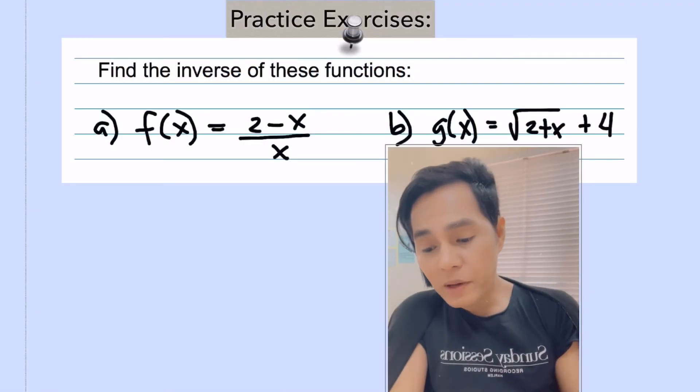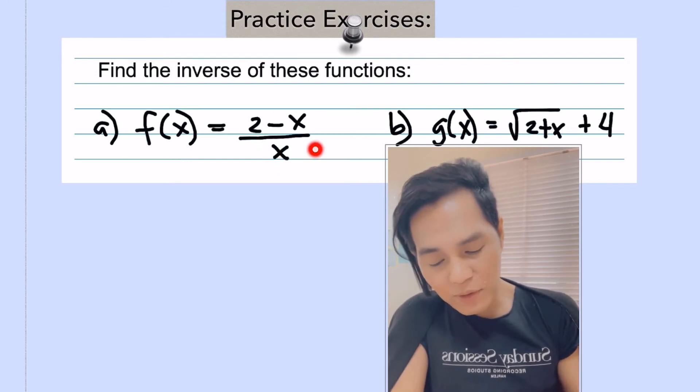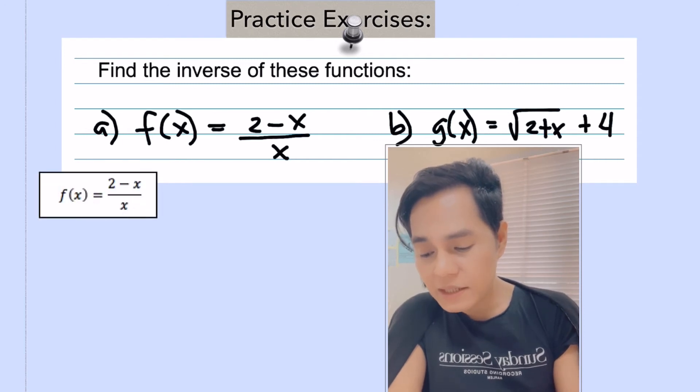Our next problem here is f(x) equals 2 minus x over x. So this is a rational function. How are we going to find out the inverse of this given function? Just simply the same procedure in algebraic method. We are just going to copy the function first and then change this into y and then change y to x and x to y.